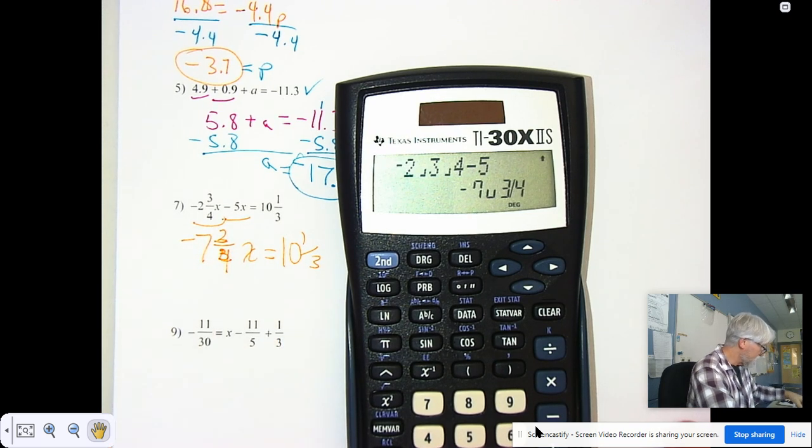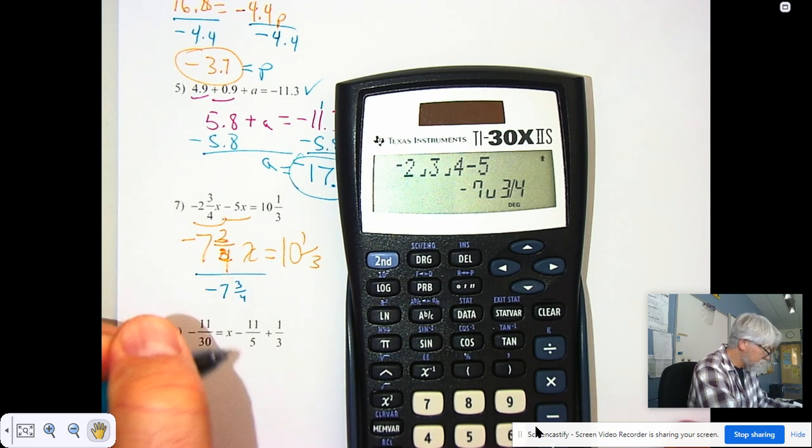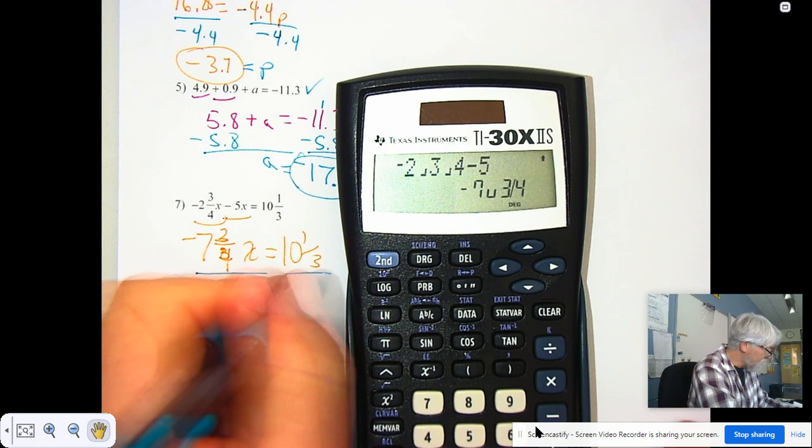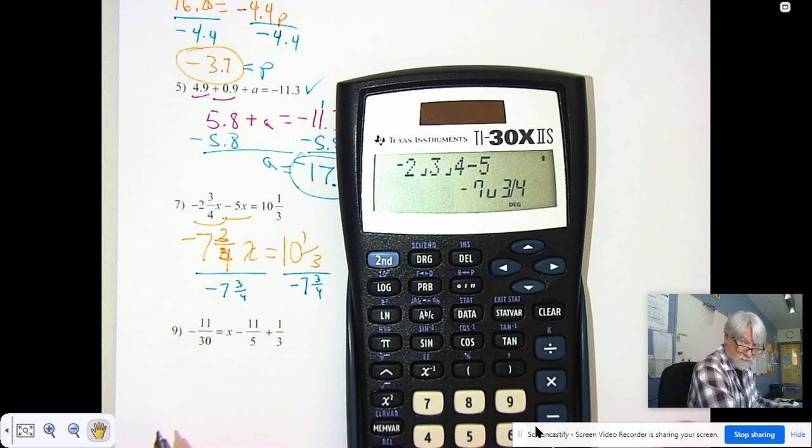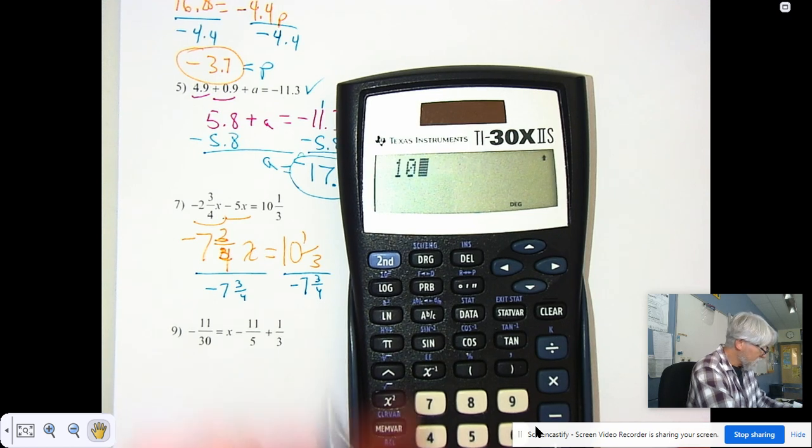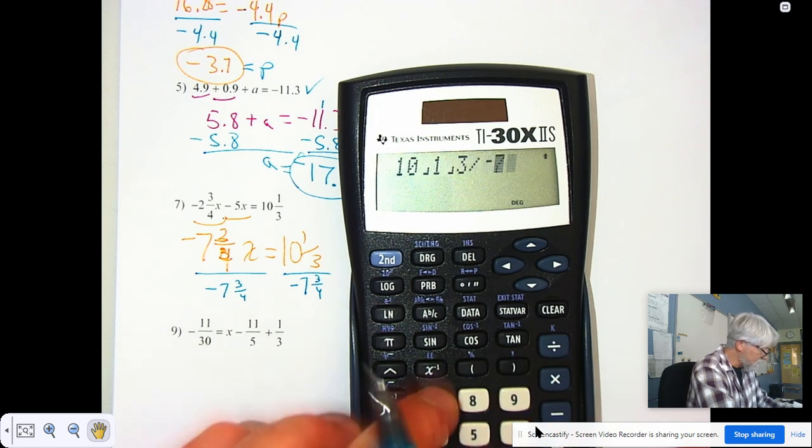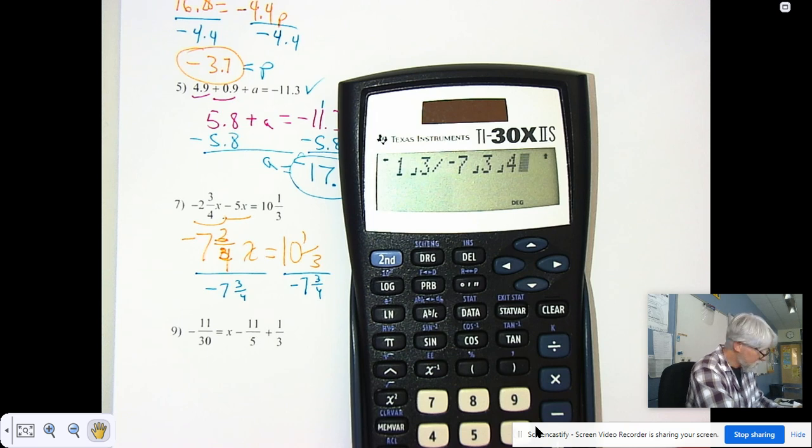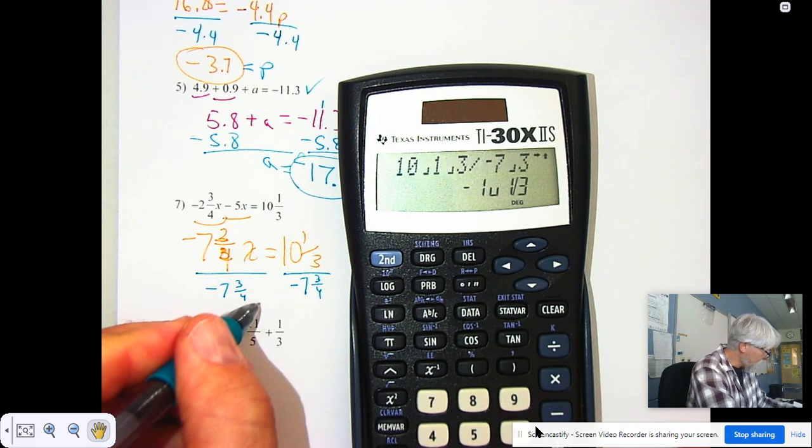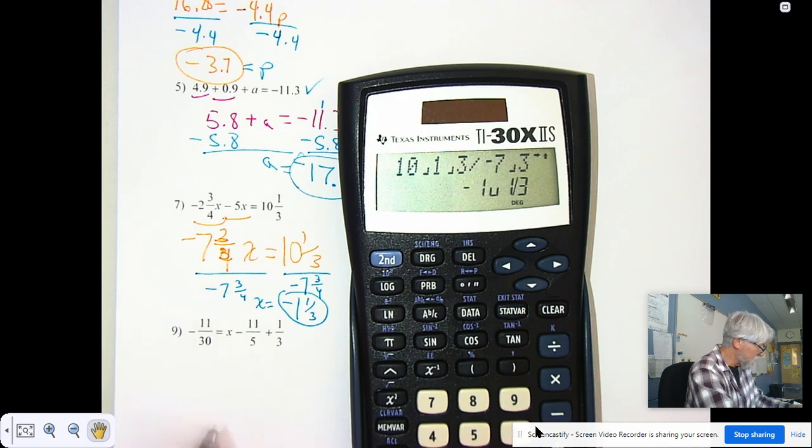This is being multiplied. So I have to divide by negative 7 and 3 fourths. Divide 10 and 1 third by negative 7 and 3 fourths. 10 and 1 third divided by negative 7 and 3 quarters. Got it punched in right. And I get my x equals negative 1 and 1 third.